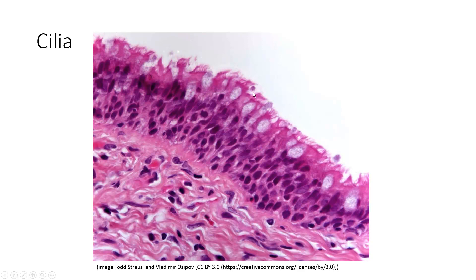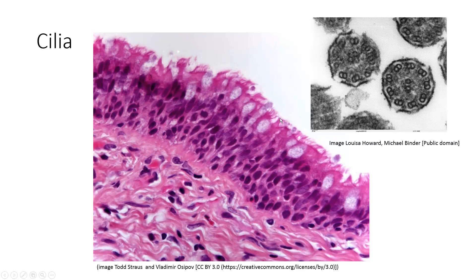Cilia are motile organelles. They impart motion, and if we look at them in cross-section, we can see that cilia are actually supported by an axoneme — that special 9+2 arrangement of microtubules which, along with some motor proteins, are going to enable these things to beat.